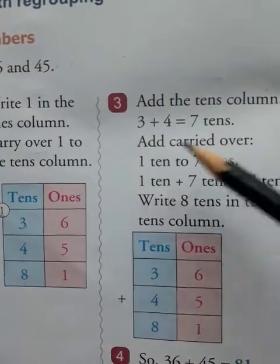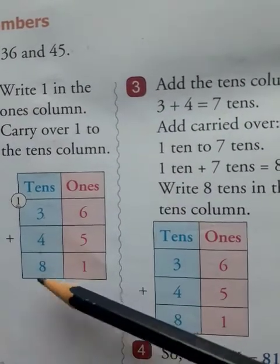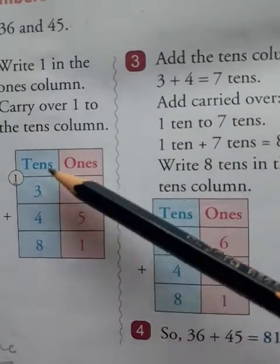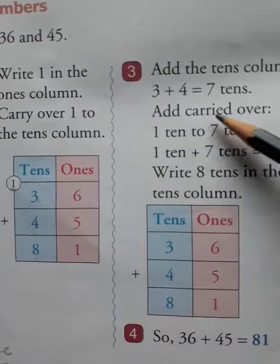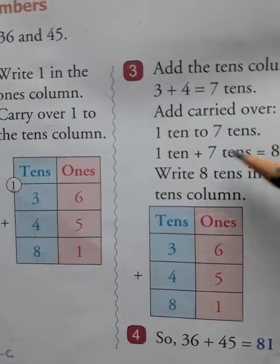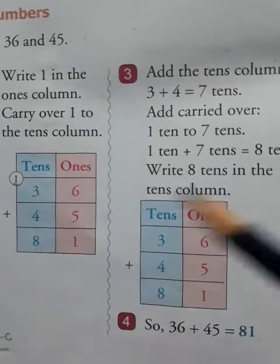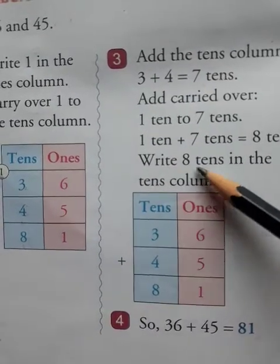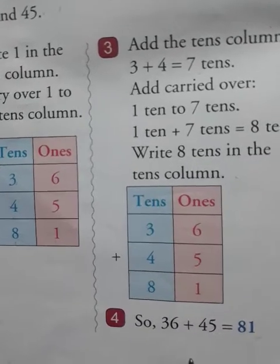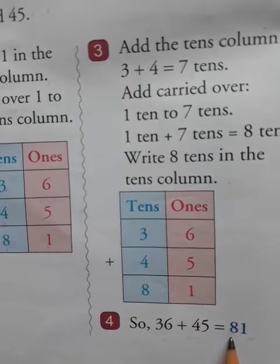Add the tens column: 3 plus 4. 3 tens plus 4 tens is equal to 7 tens. Add the carried over 1 ten to 7 tens. 1 ten plus 7 tens is equal to 8 tens. So you write here 8 tens. Write 8 in the tens column. So 36 plus 45 is equal to 81.